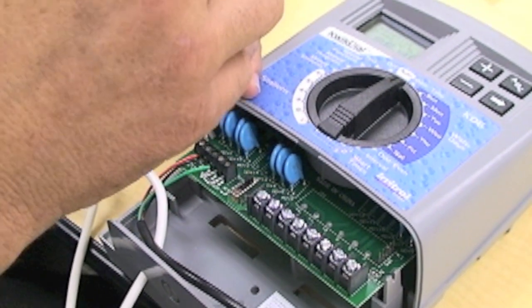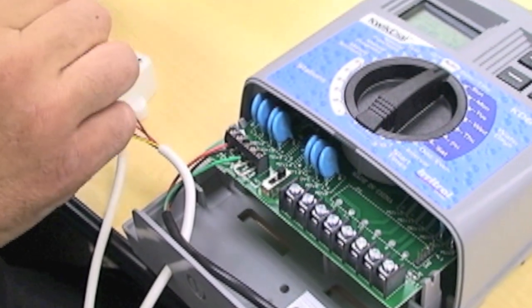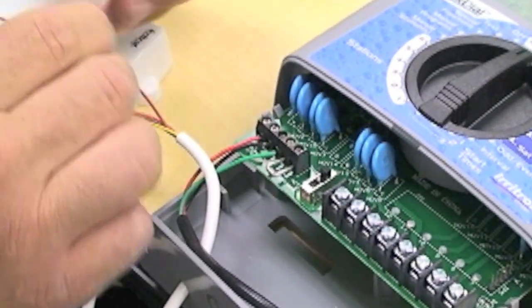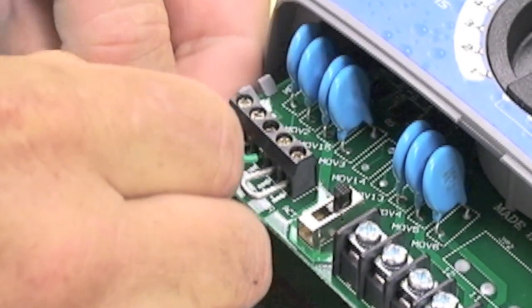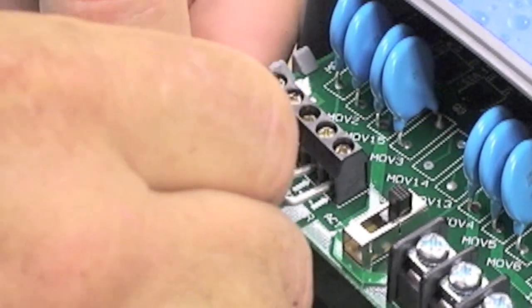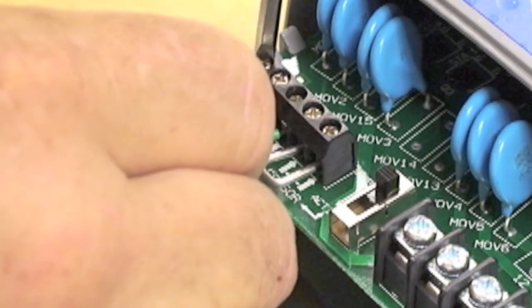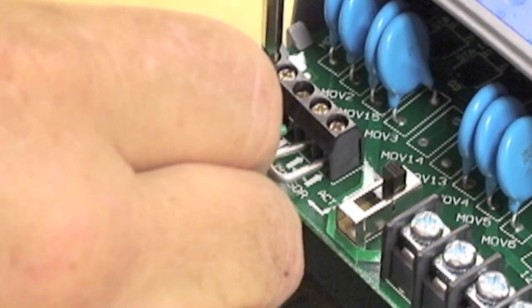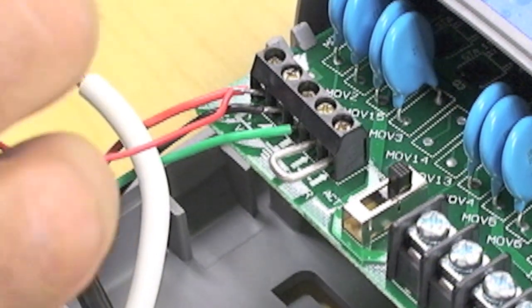By loosening up the screws on the 24 volt side, we're going to be able to slip in both of these wires to apply the 24 volts to the receiver.